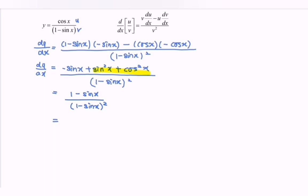So if you notice that, we can simplify the situation. Then finally we have dy dx is equal to 1 over bracket 1 minus sin x.